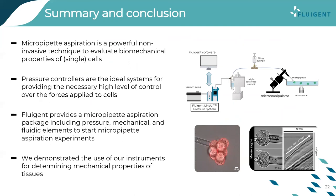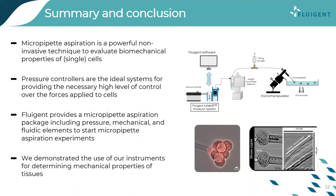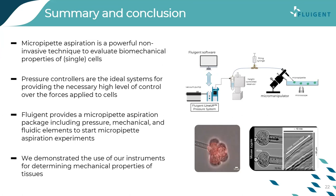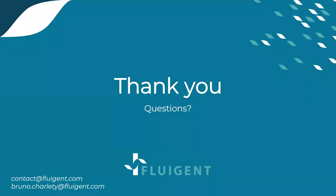In summary, micropipette aspiration is a powerful non-invasive technique to evaluate the properties of single cells or aggregates of cells. Pressure controllers are a very interesting system for providing the high degree of control necessary for this application. We provide a complete package including the pressure, mechanical, and fluidic parts to start micropipette aspiration experiments. Thank you for your attention — I hope you enjoyed the presentation and I'm happy to answer questions. You can contact us at contact@fluigent.com or at my personal address bruno.charlot@fluigent.com.